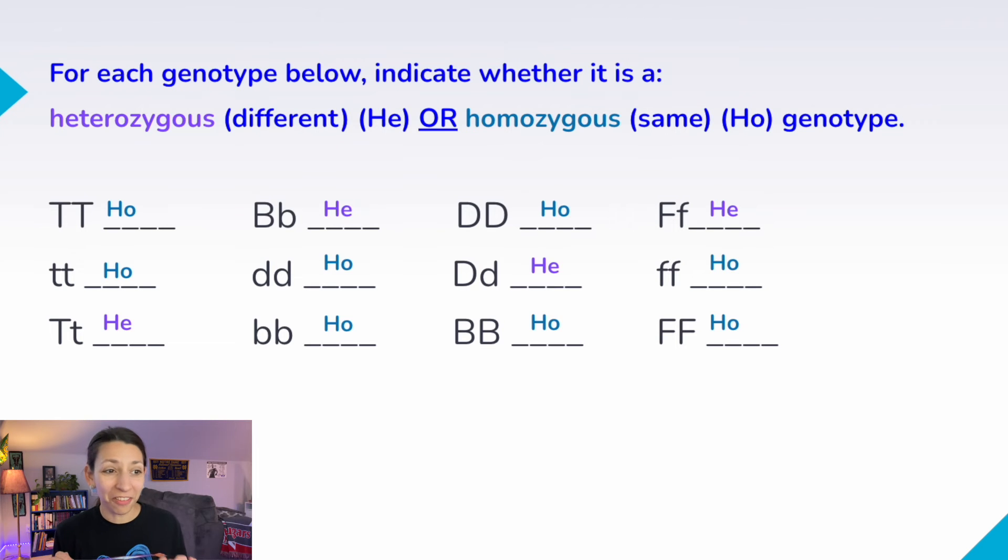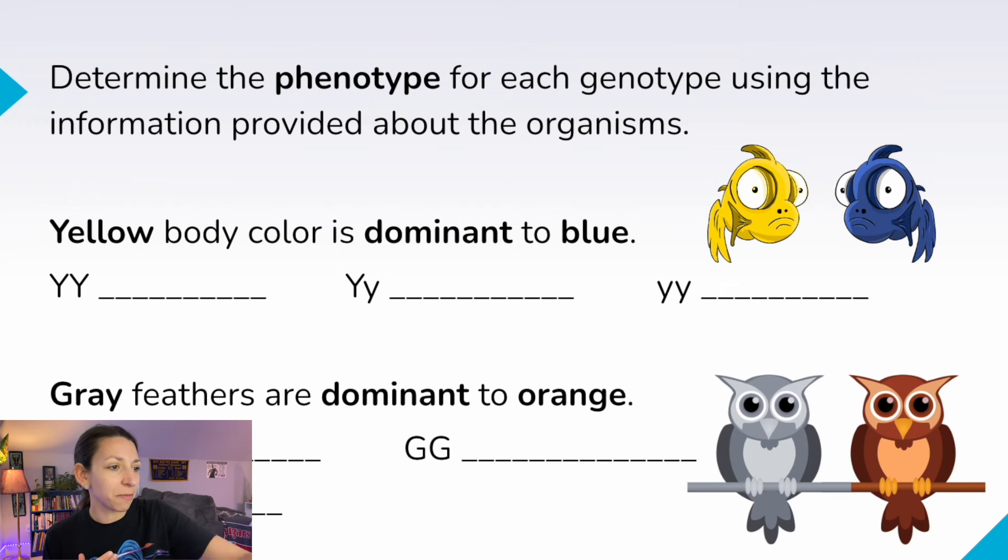All right, so I'm not going to read all of these out loud. You can check your answers here, but I'll do a few of them to go through. Remember, big T, big T, that's homozygous, and technically we call it homozygous dominant to have two dominant alleles. Big B, little b is heterozygous. We have two different alleles, one dominant, one recessive. And then this little t, little t is also homozygous, but we call it homozygous recessive since both the alleles are recessive. All right, let's keep moving.